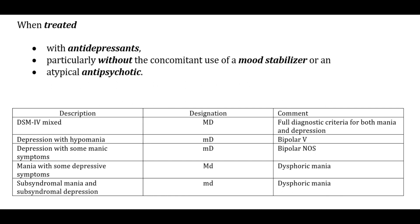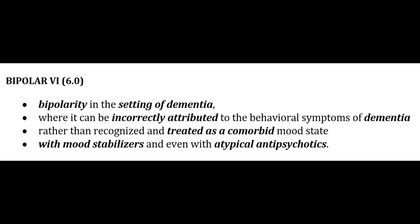The mixed states are summarized in this table. Coming on to Bipolar 6 — it is bipolarity in the setting of dementia, where it can be incorrectly attributed to the behavioral symptoms of dementia rather than recognized and treated as a comorbid mood state with mood stabilizers and even atypical antipsychotics.